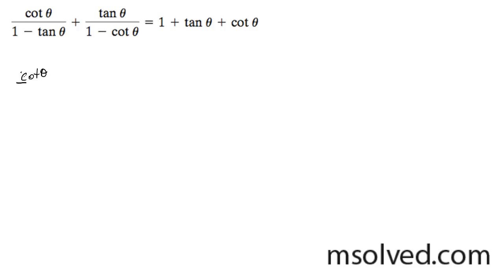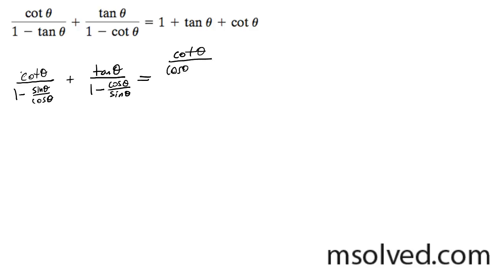So cotangent theta — we get 1 minus sine theta over cosine theta, and then plus tangent theta over 1 minus cosine theta over sine theta. Now I'm going to do some tricks with the denominator: cotangent theta becomes cosine theta minus sine theta, and this becomes cosine theta plus tangent theta over sine theta minus cosine theta, all over sine theta.